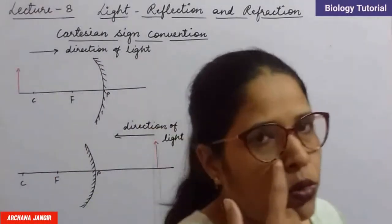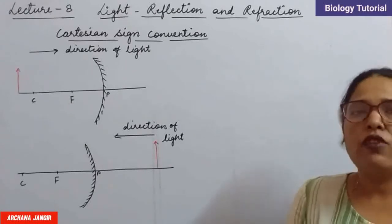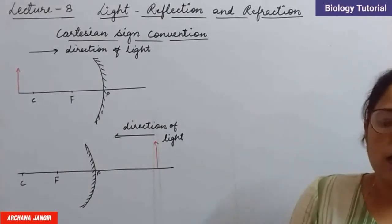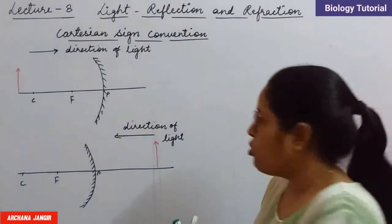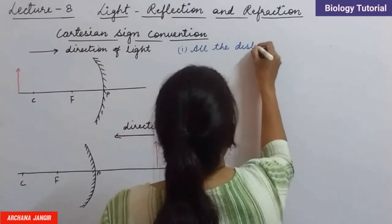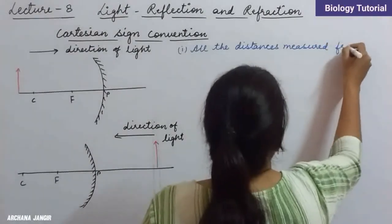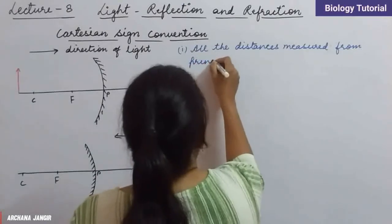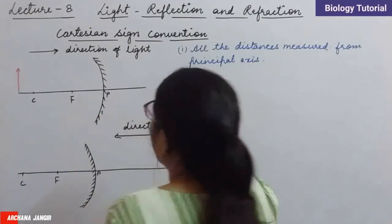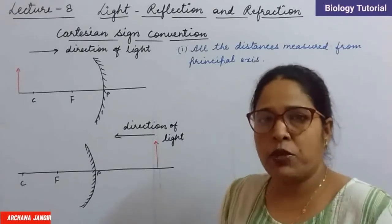Here we have two basic rules to follow. All the distances — whether the distance of the object, distance of the image, focal length — all these distances we have to measure from P, the pole. First rule: all distances are measured from the principal axis. All distances are measured from P.